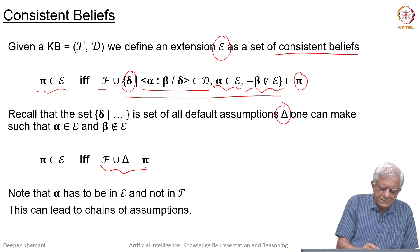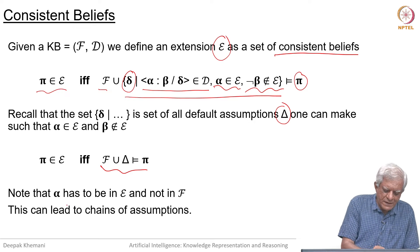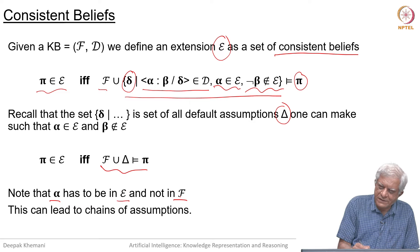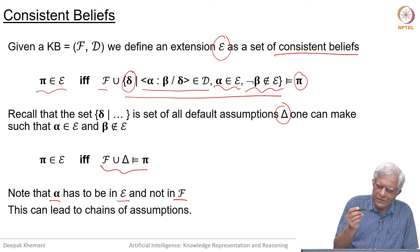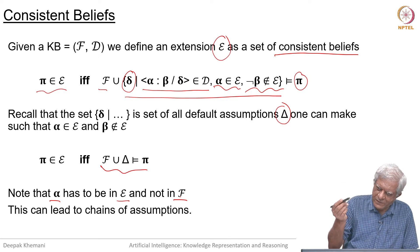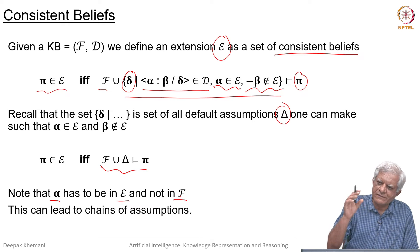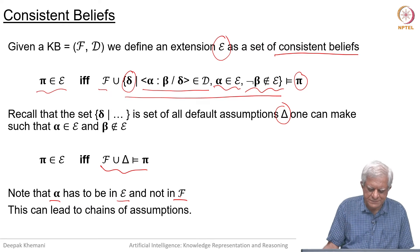Observe that alpha has to be in the extension epsilon and not merely in the first-order theory. This means that if you make a default assumption, you can make another default assumption based on that, if there is a default rule in which the first assumption is the prerequisite.